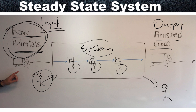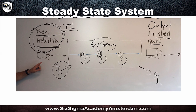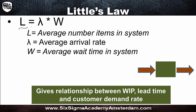When this assumption is met, we refer to it as a steady state system. This is actually a quite realistic assumption — most systems would be steady state. This is how Little's Law was defined by Professor Little. Lean professionals have rephrased it slightly, expressing the relationship between WIP (work in process), lead time (the time that passes from beginning to end of a process), and average customer demand rate.